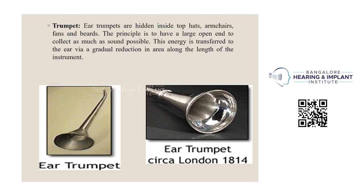Ear trumpets were hidden inside top hats, armatures, fans, and beards. The principle was to have a large open end to capture as much sound as possible. From the largest portion of the ear trumpet, sound was collected, and energy was transferred to the ear via gradual reduction in the area along the length of the instrument.